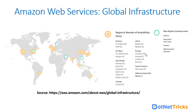In Europe there are four current regions — Frankfurt, Iceland, Ireland, London, and Paris — each having three availability zones. In South America, the São Paulo region has three availability zones, and in AWS GovCloud there are three availability zones. Upcoming regions in AWS global infrastructure include Bahrain, Hong Kong, Sweden, and AWS GovCloud.